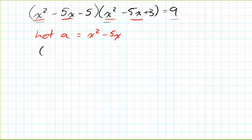We're going to say let a, in this case, equal x squared minus 5x. That changes this question. This question then becomes (a - 5)(a + 3) = 9.